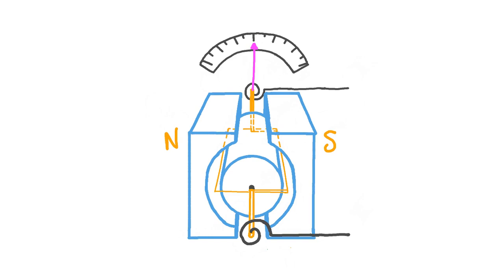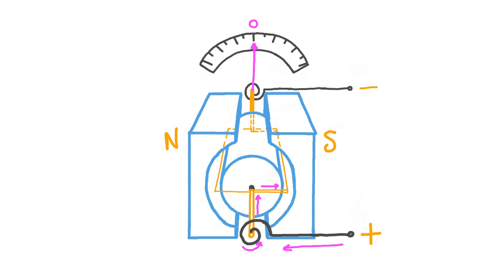With no current flowing through it, the needle points to zero. Let's say one terminal is connected to the positive electrode of a cell and the other to the negative electrode. Conventional current refers to the flow of charge from positive to negative, so the current in the galvanometer flows in one direction. Charge flows along the torsional spring, down the conducting rod, and then around the loop of wire. It flows around all the windings of the coil, before flowing down the other conducting rod and out of the galvanometer back towards the negative electrode of the cell. To understand how a moving coil galvanometer works, we just need to focus on the current within the coil of wire.